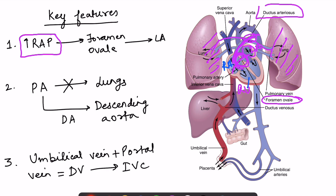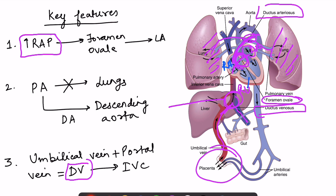Third, the umbilical vein plus portal vein form the ductus venosus. In this diagram, you can see that the placenta is where oxygenation of blood occurs, and this umbilical vein combines with the portal vein to form ductus venosus. Blood is not going into the liver sinusoids; rather it is bypassing the liver and draining directly into the inferior vena cava. So the three fundamental differences are ductus arteriosus, ductus venosus, and patent foramen ovale.